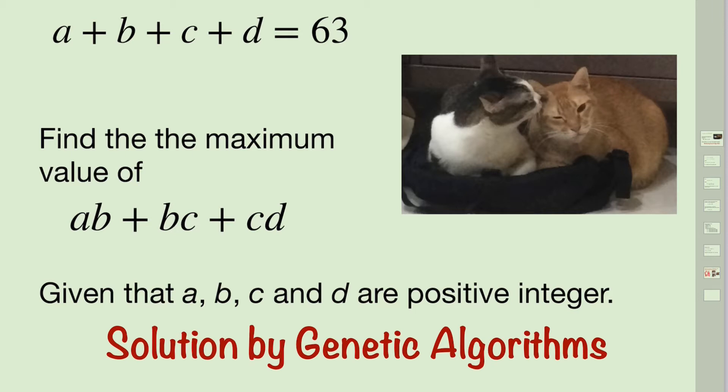Today we will look at a popular question on YouTube. Many mathematicians on YouTube have already provided answers using algebraic methods. The problem is: given a + b + c + d = 63, what is the maximum value of ab + bc + cd, where a, b, c, and d are positive integers, for example 1, 2, 3, 4, and so on? There are many answers provided by mathematicians in terms of algebra, but today we will solve it using genetic algorithms, an optimization method.